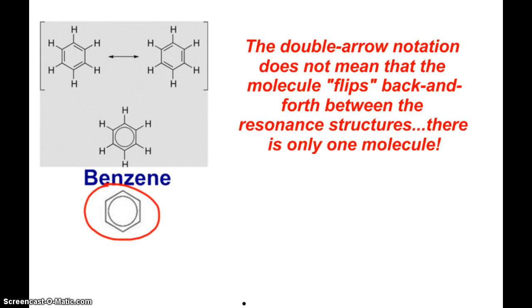Now, the double arrows doesn't mean that the molecule flips back and forth between these structures. There's only one benzene molecule, there's only one ozone molecule. There's just a blending of those electron clouds, and the electrons are not just found static in between the two atoms.